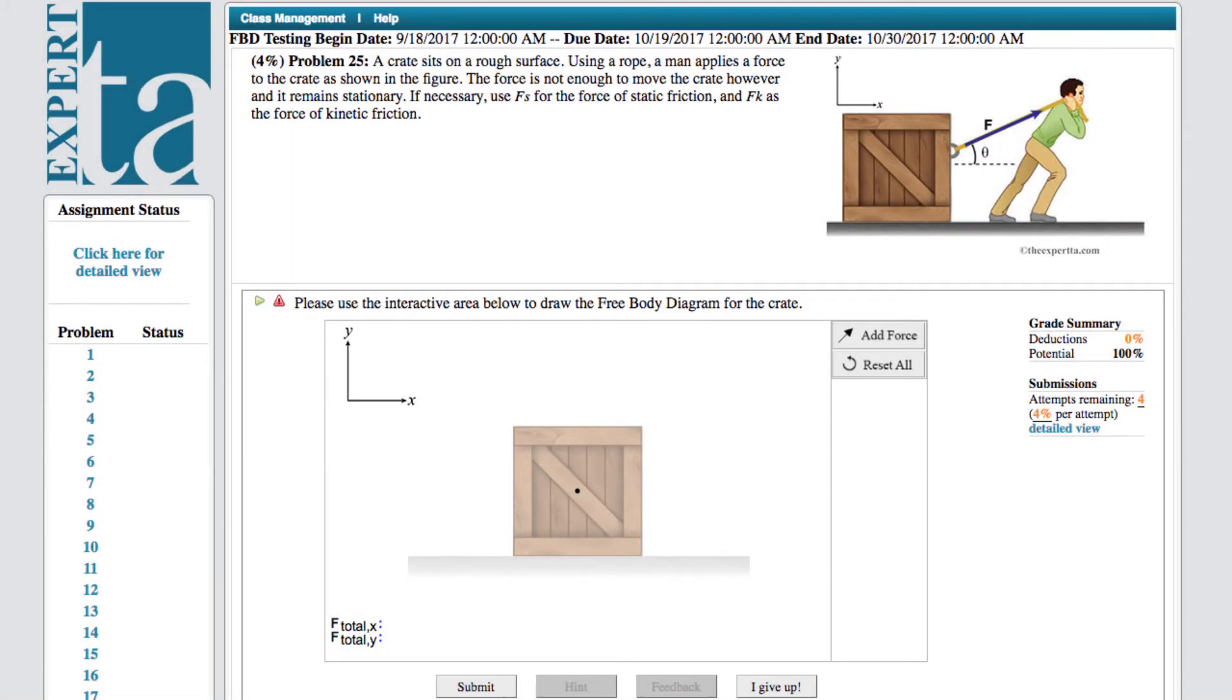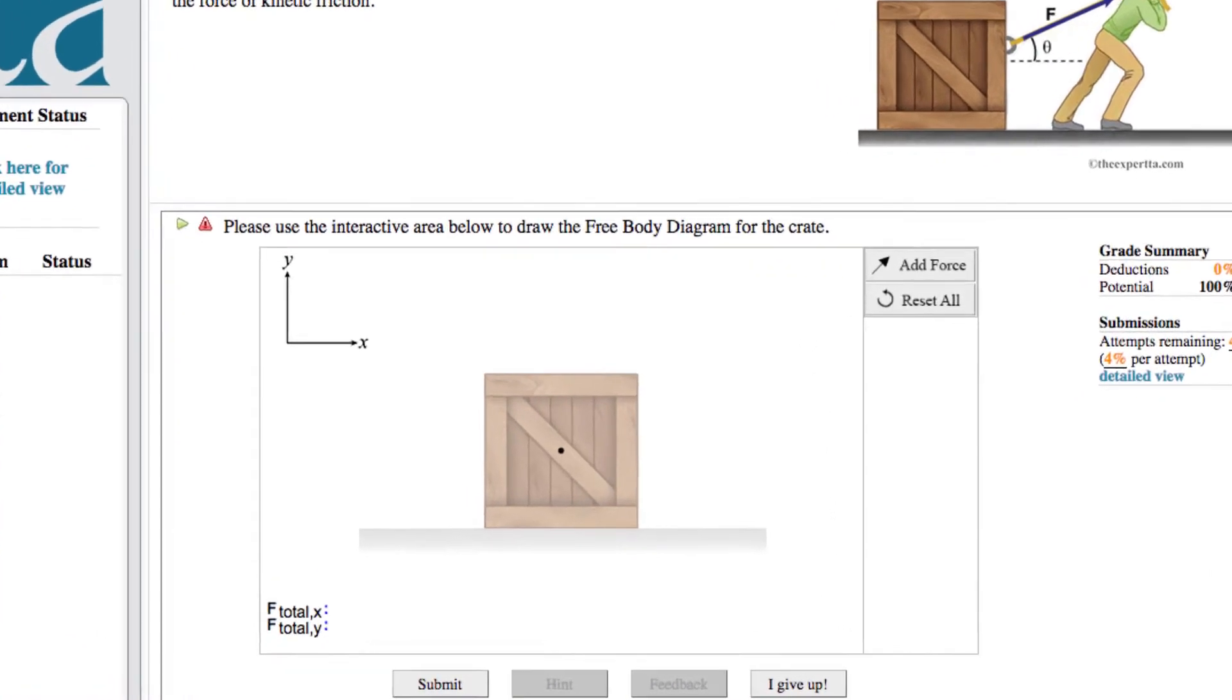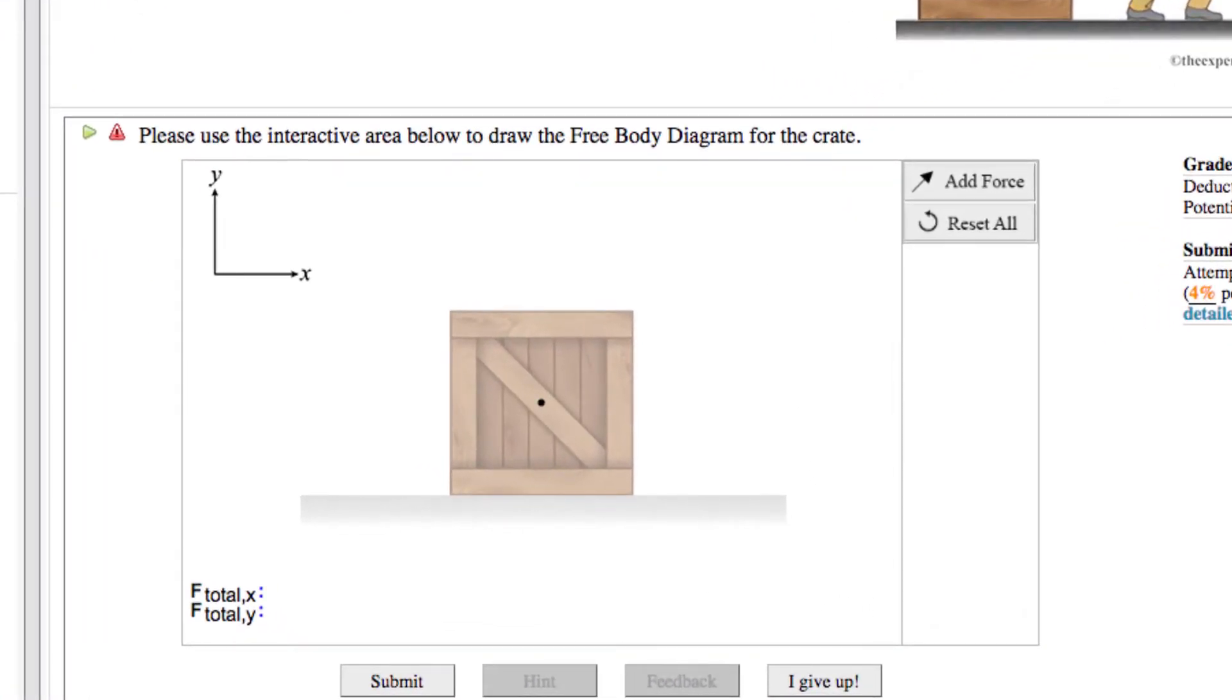When students are presented with a free body diagram problem, they will see an interactive space with a silhouette of the object and its surroundings over which they will add force vectors.